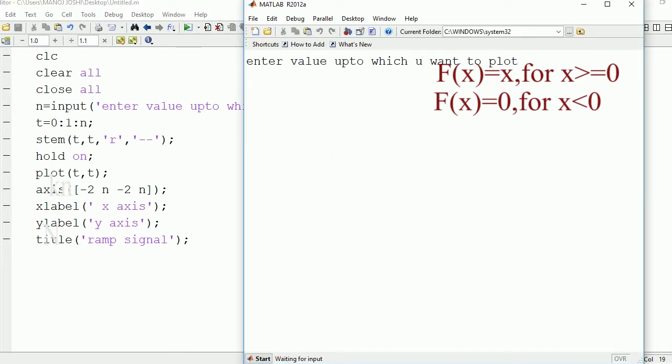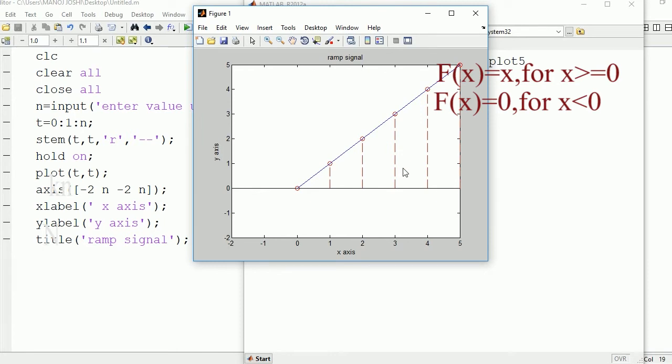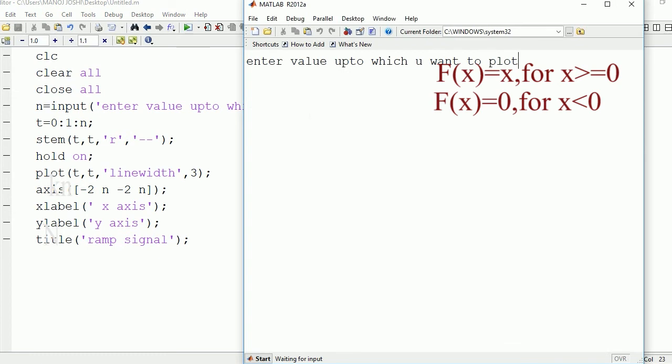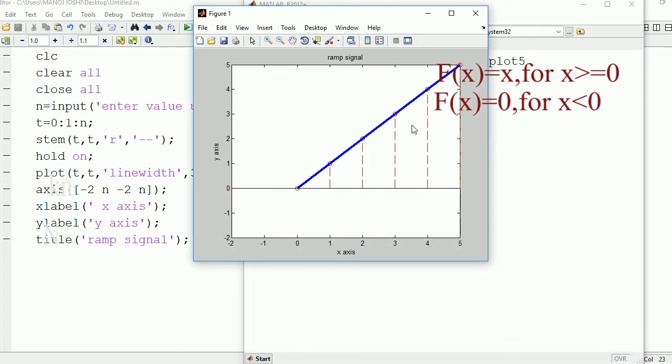Now plot(t,t) linewidth - this is just to change the line width of the line which we have plotted. So enter value five. The width of the line has been changed.